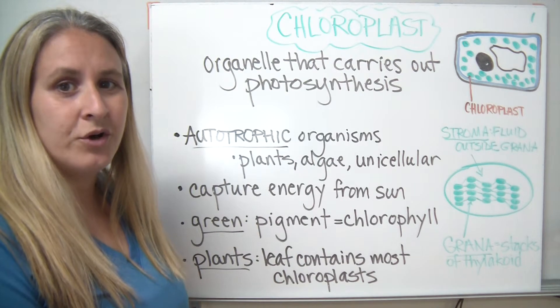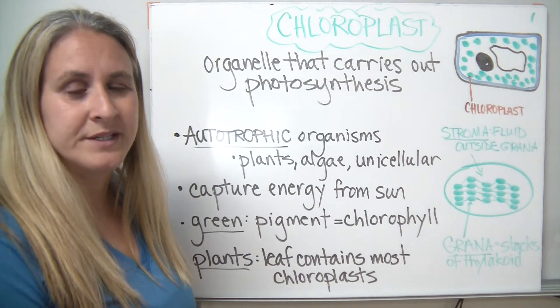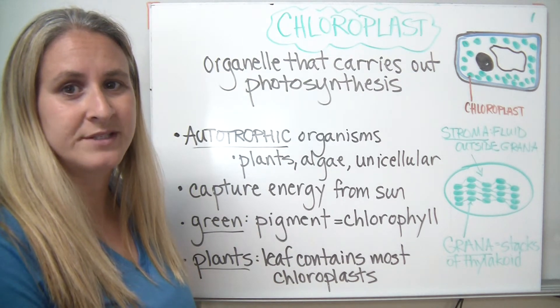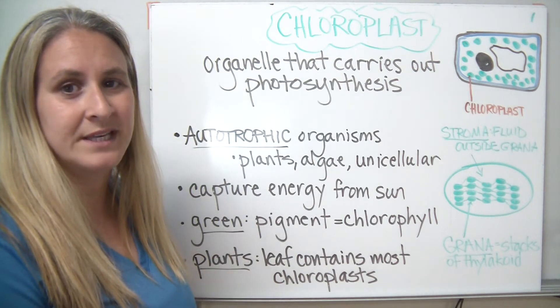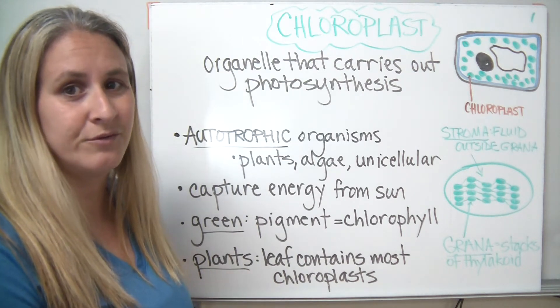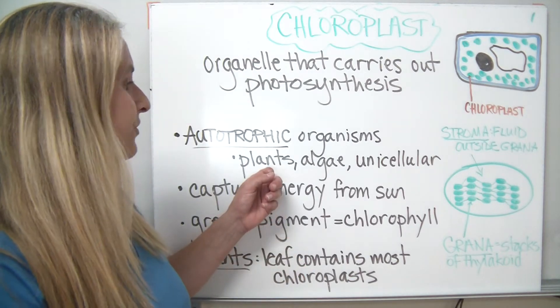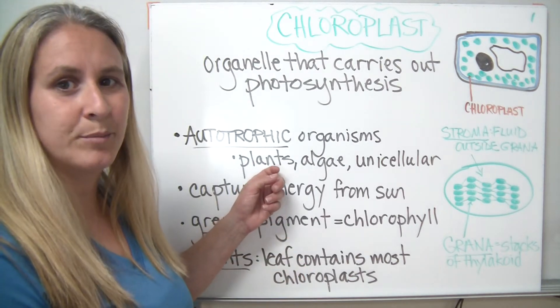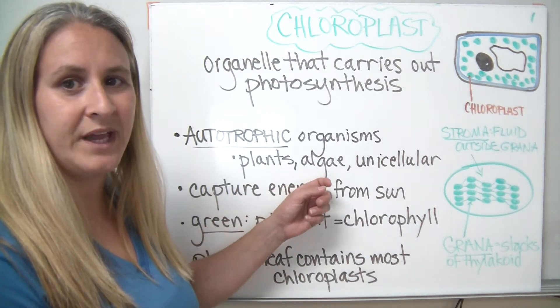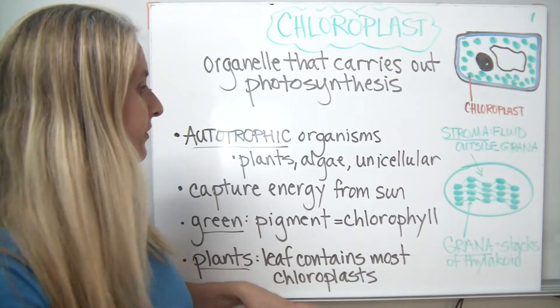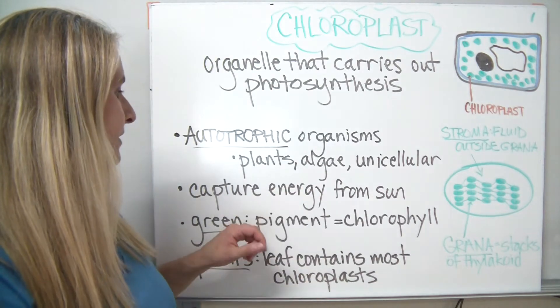Chloroplasts are found in what we call autotrophic organisms. Remember, autotrophic organisms are organisms that can make their own food for themselves. Those include things like plants, algae, and some unicellular or single-celled organisms.